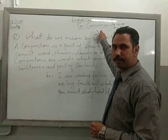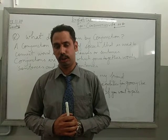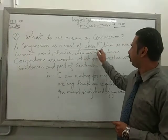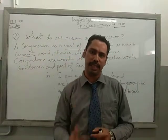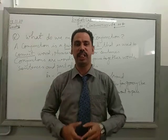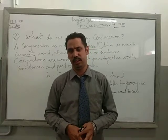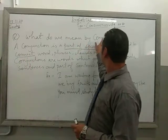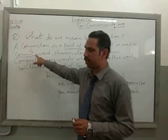So, what do we mean by conjunction? Conjunction is a part of speech — one of the eight parts — that is used to connect. Conjunction means joining, connecting, or linking from one sentence to another, one word to another, one phrase to another, one clause to another. The most common conjunctions we use in sentences are: and, but, or, if, since, yet, so, for.